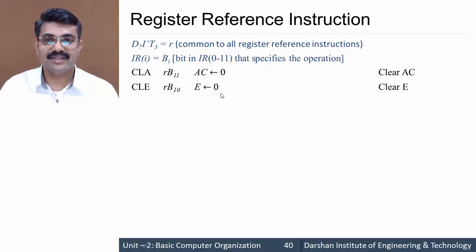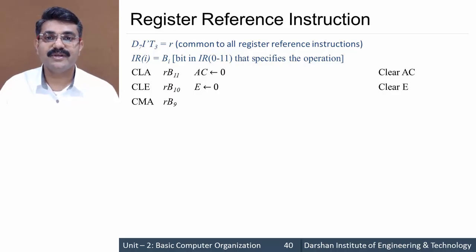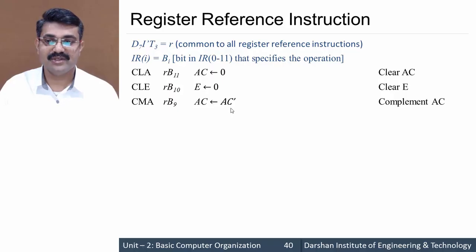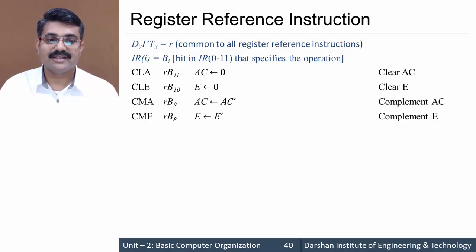The next instruction is CMA — complement AC. Complement AC happens at time r·b9, and the operation is AC equals AC complement. Next we have CME, which happens at time r·b8. At that time E equals E complement — so complement E. This is the CME instruction.